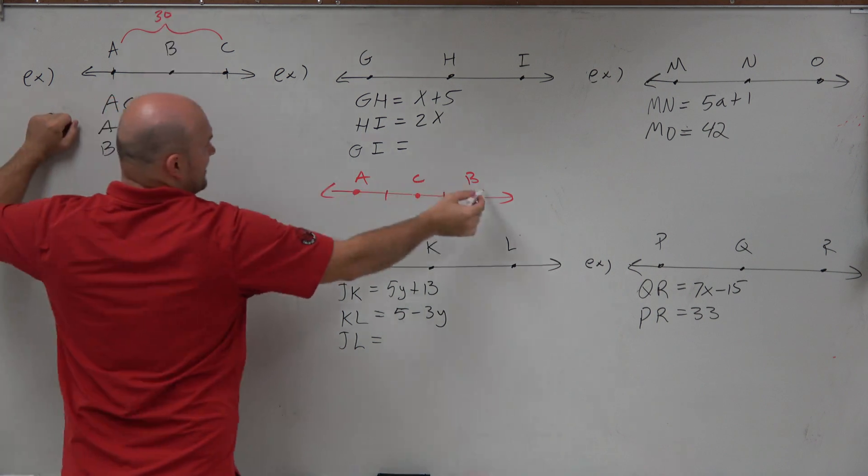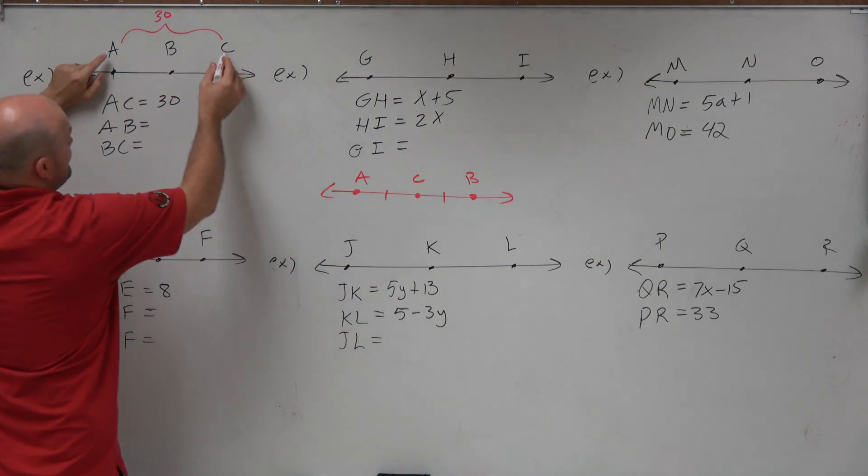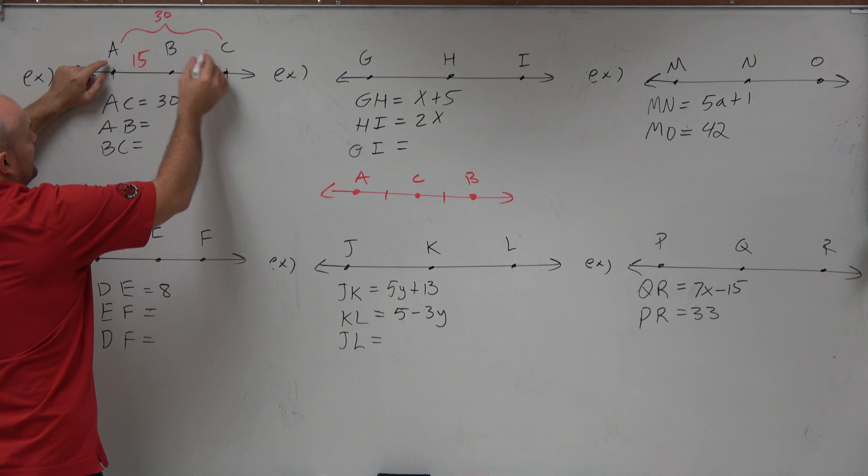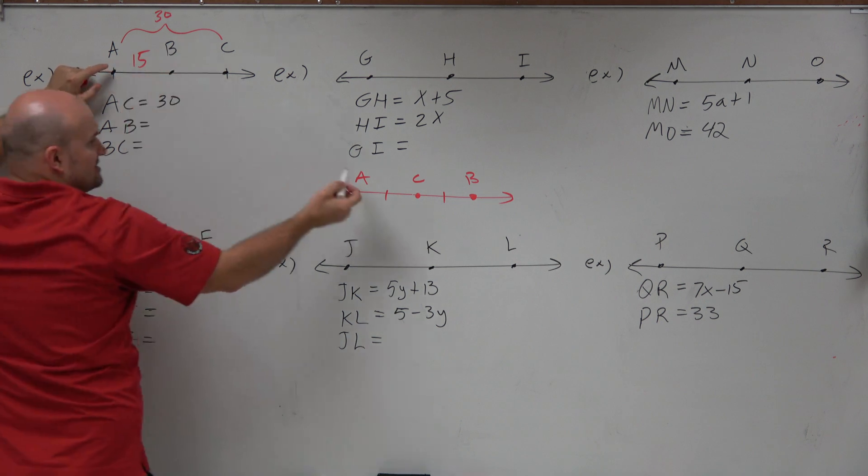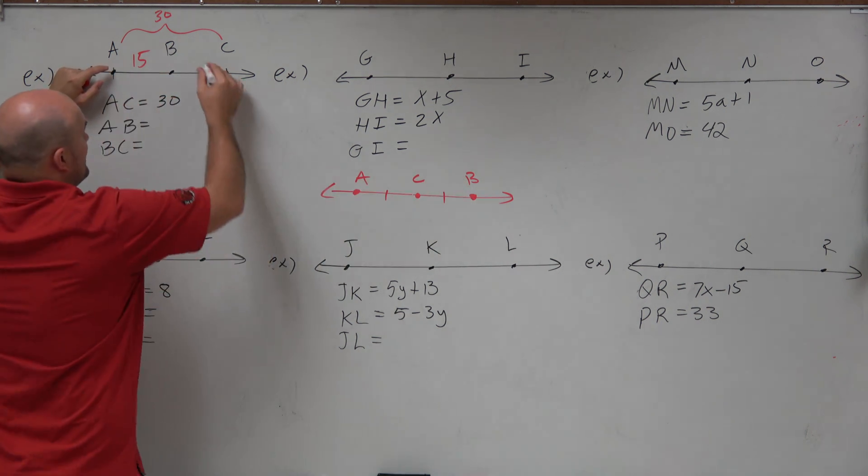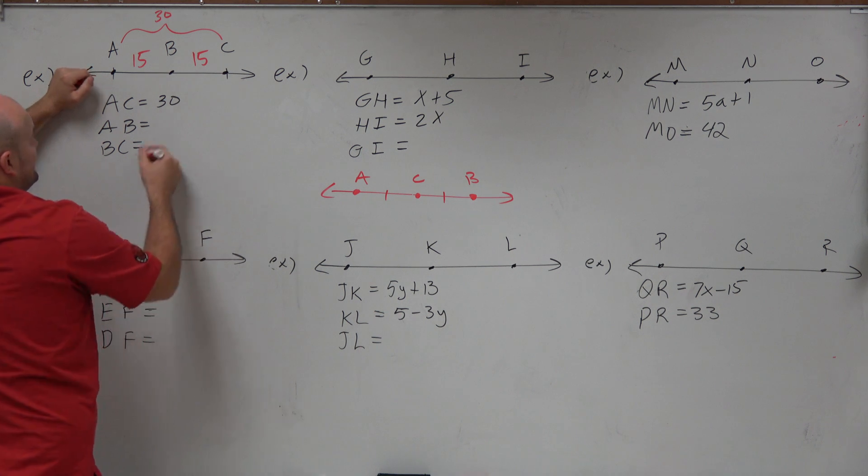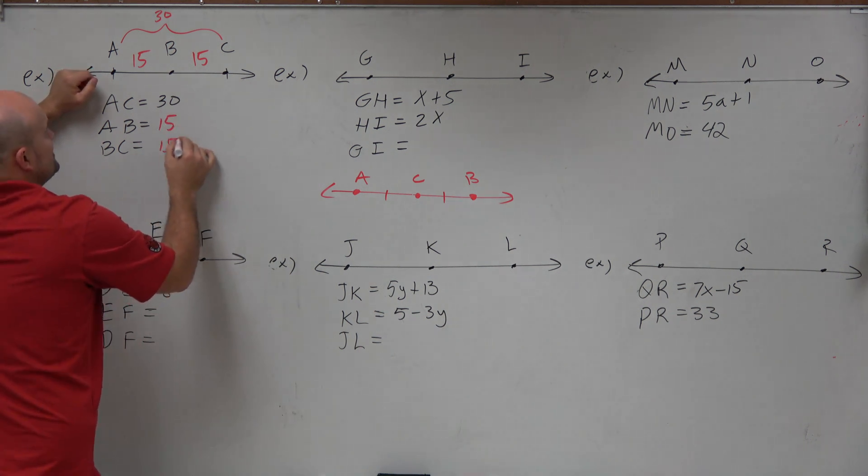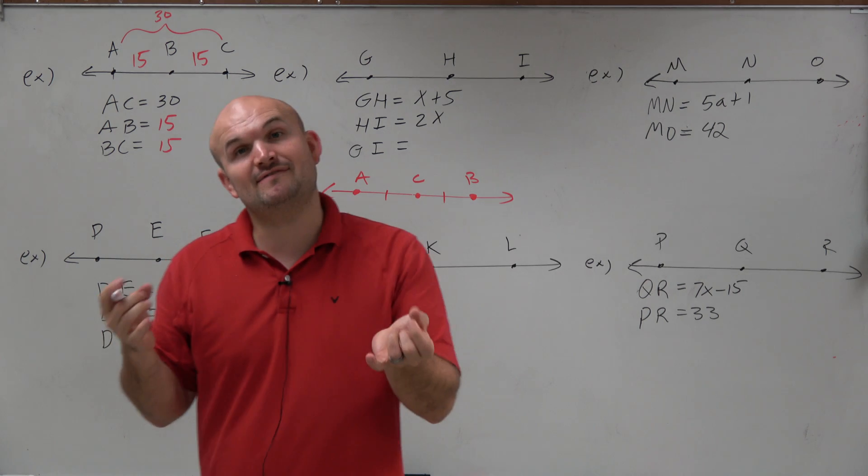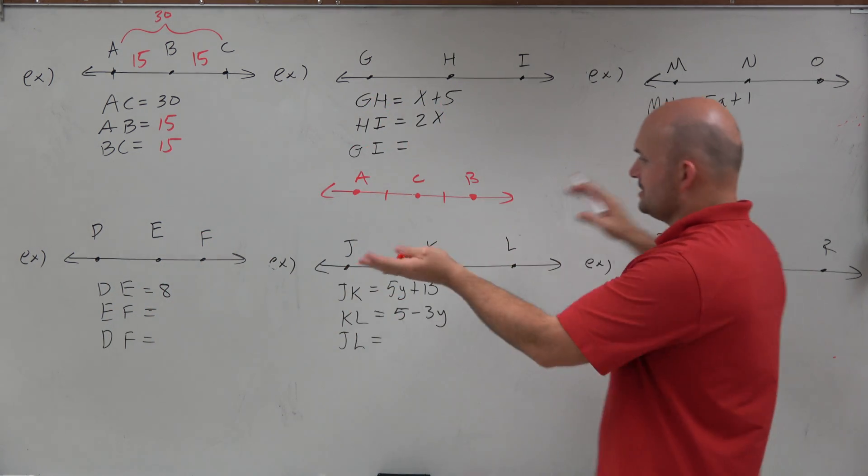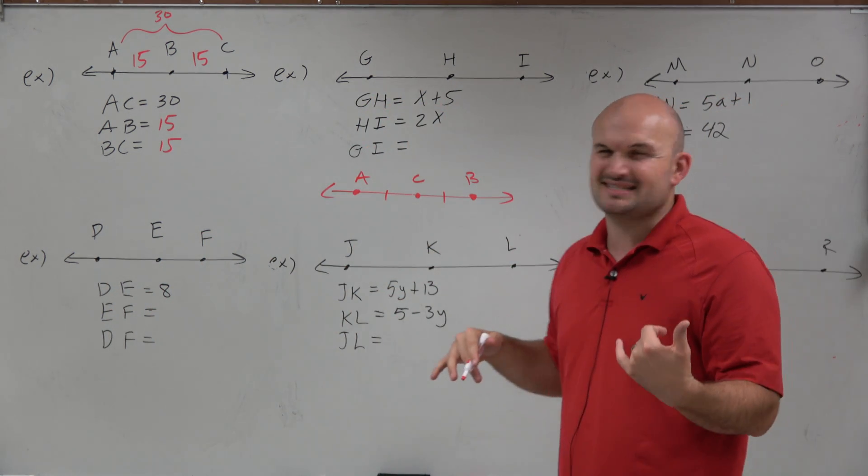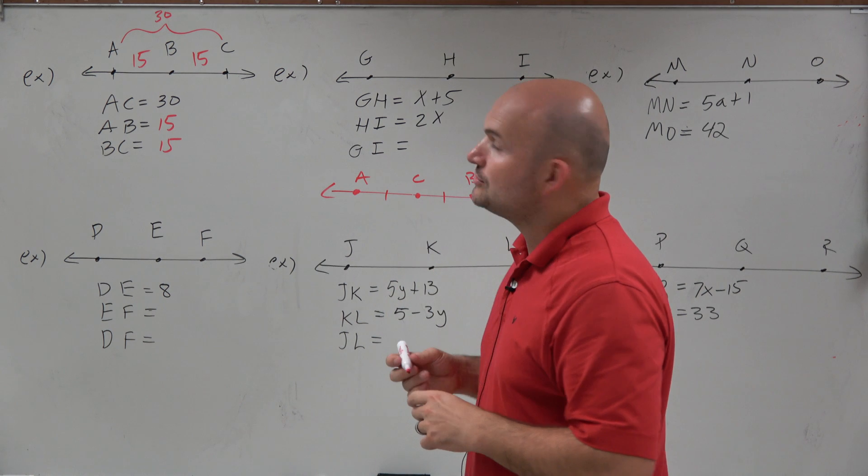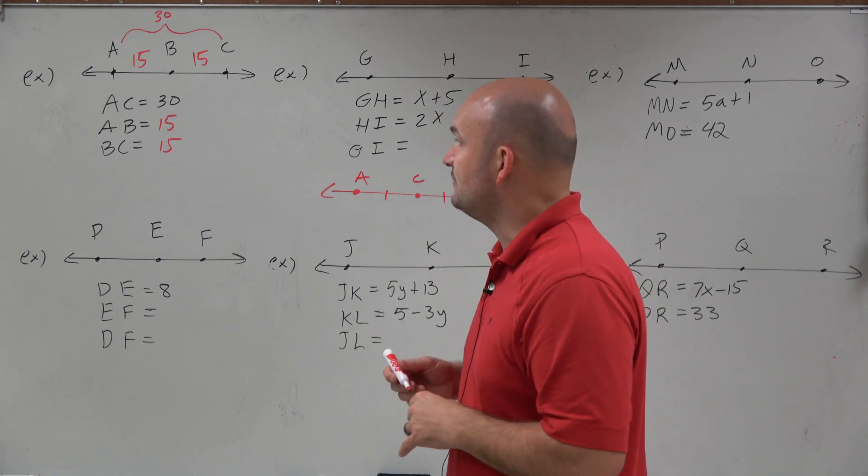I know that half of that is going to be 15, right? And since AC is congruent to CB, I know that that length has to be 15 as well. So just using our understanding of our midpoint, if we're given one length in this scenario, and notice how all my points are collinear, they all lie on the same line. We can identify that those two points are going to equal 15 and 15.